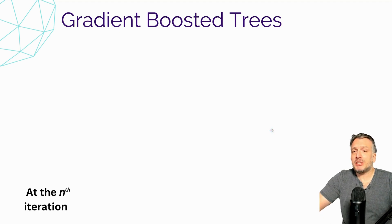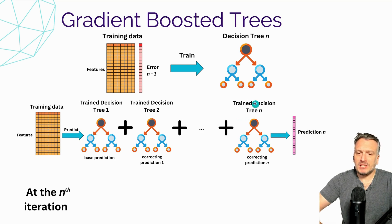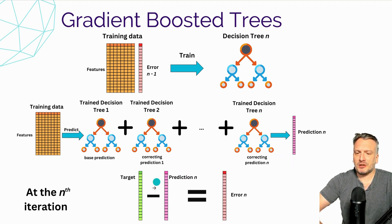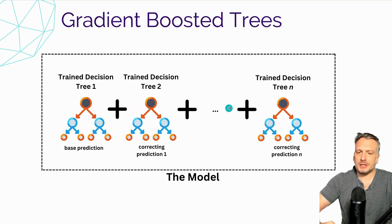So we have an iterating process. First, we use the error of the previous step to learn a new tree, then we add this new tree to the already known set of trees and predict a new set of predictions. From this new set of predictions we compute a new error, which is used in the next iteration to train a next tree that further corrects the ensemble. The full model is a combined set of trees, adding trees little by little to correct the initial predictions and converging toward a better prediction.